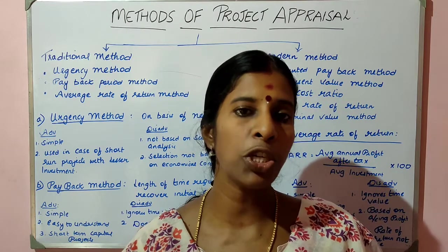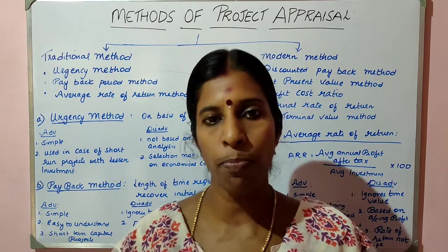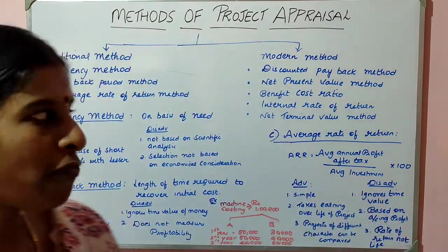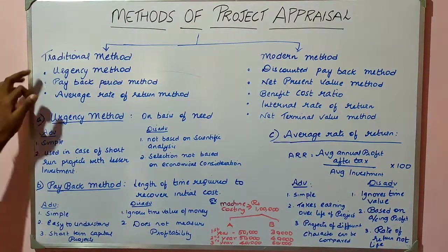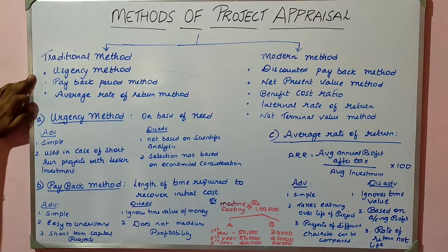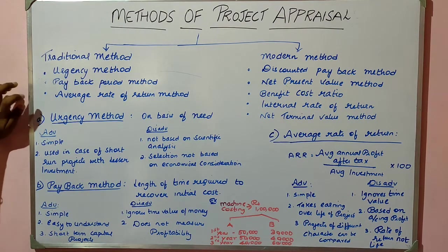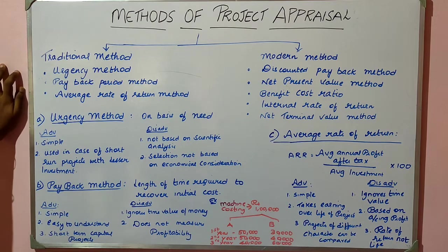There are three traditional methods of project appraisal. The first one is the urgency method, the second one is the payback period method, and the third one is the average rate of return method.